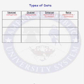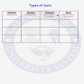In this lesson, we will talk about the four types of data: nominal data, ordinal data, interval data, and ratio data. The nominal and ordinal types of data are categorical data. Interval and ratio data are quantitative or continuous types of data.